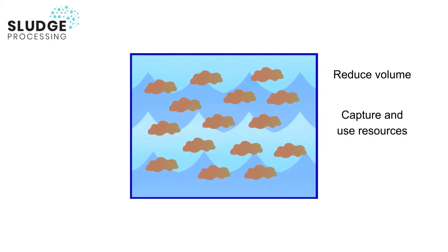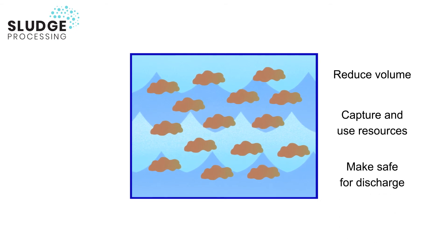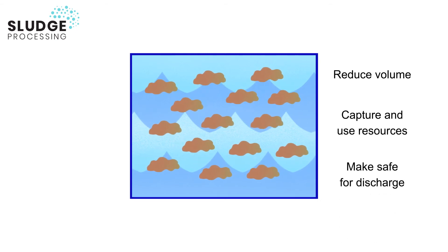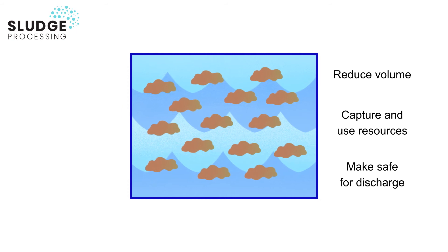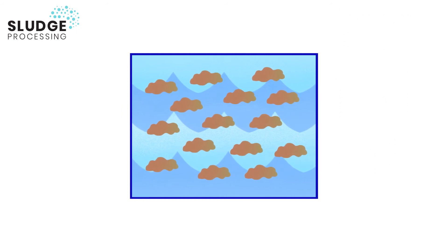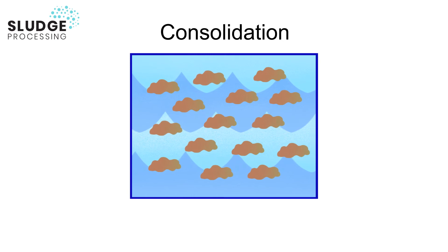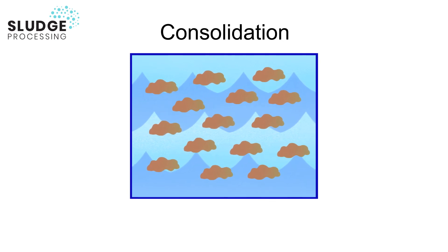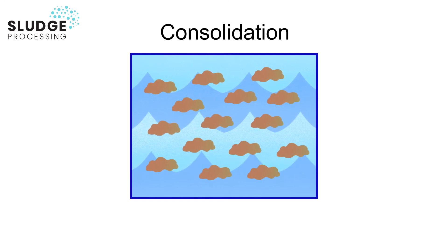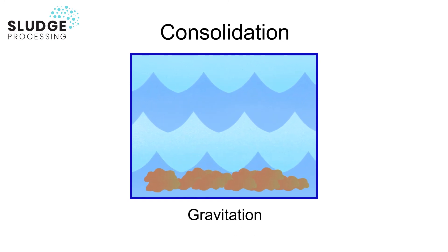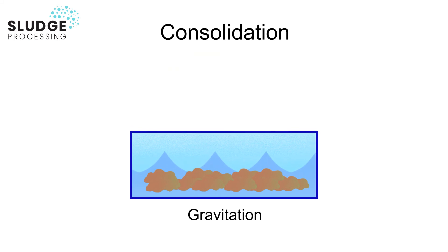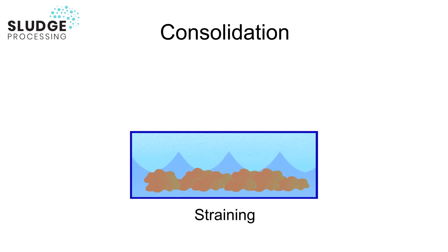The aim of processing the sludge is to reduce its volume, capture and use the resources in the sludge, and/or make it safe for discharge. There are essentially two overall methods for doing this. Firstly, consolidation aims to reduce the sludge volume by removing the water and the associated dissolved solids. The simplest of these processes is gravitation — the solids are allowed to settle and the supernatant liquid removed, reducing the sludge volume as a result. The solids can also be removed by straining, or the water removed by evaporation as with sludge drying beds.